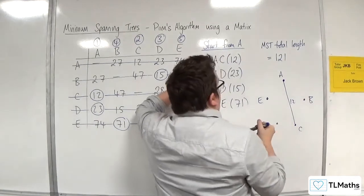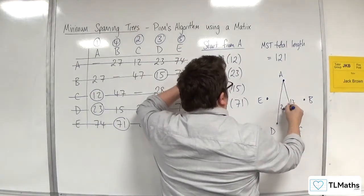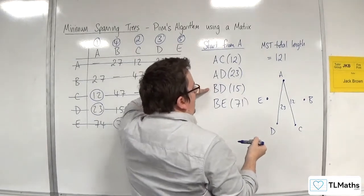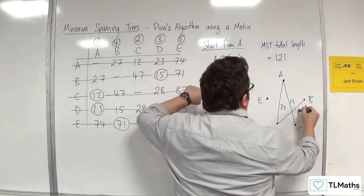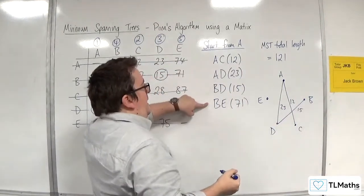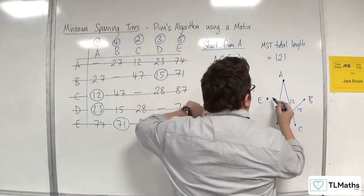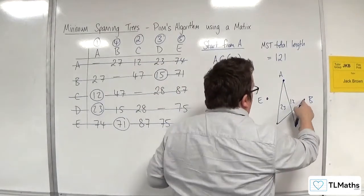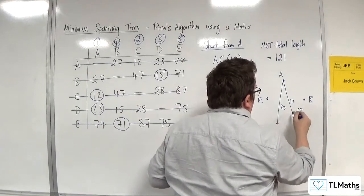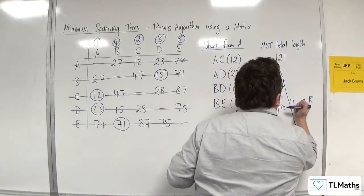I've connected A to D, so 23. I've connected B to D, so B to D, 15. And B, E, 71.